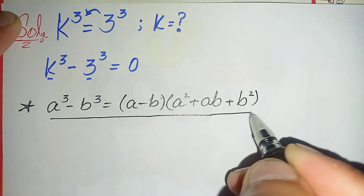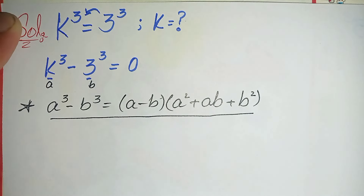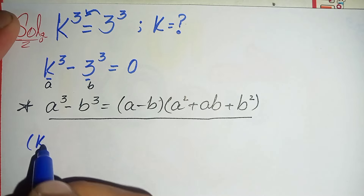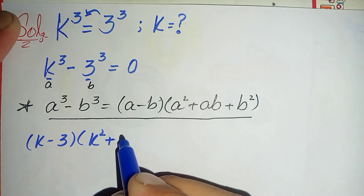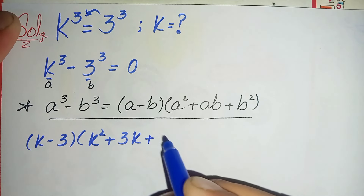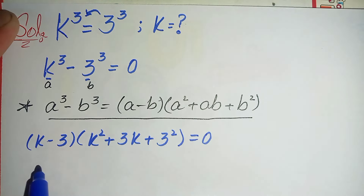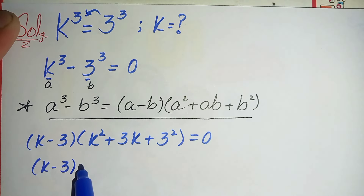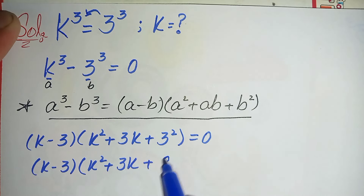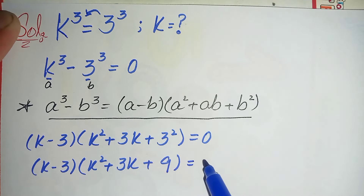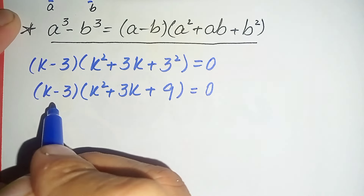Using this cubic identity, here a is k and b is 3, so this will become: k minus 3, times k squared plus 3k plus 3 squared is equal to zero. Now 3 squared is 9, so this becomes k minus 3, times k squared plus 3k plus 9, is equal to zero.